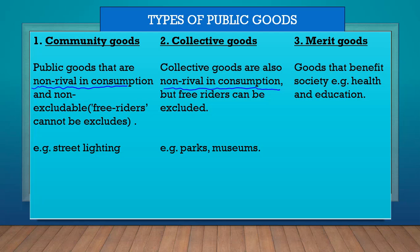The difference between community goods and collective goods is in the excludability. Community goods are non-excludable — you cannot exclude anyone from using them. Whereas for collective goods, you can exclude free riders. Free riders are basically people that use the goods but don't want to pay for them. For community goods, such as street lighting, you cannot exclude anyone. Even if people don't pay for these goods, they can still use them. But for collective goods, free riders can be excluded — people that don't want to pay for the goods can be excluded.